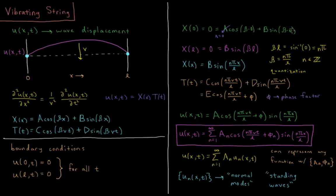So zero equals A, that means A equals zero. So there's going to be no cosine part for our spatial wave.